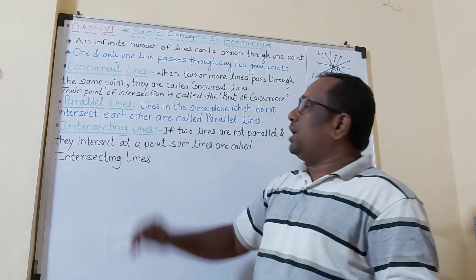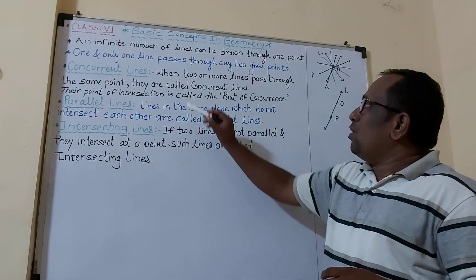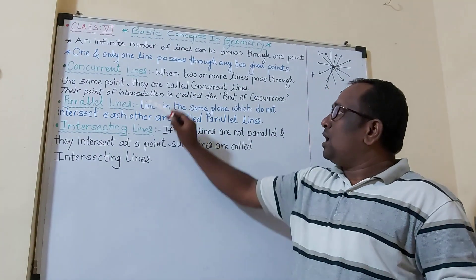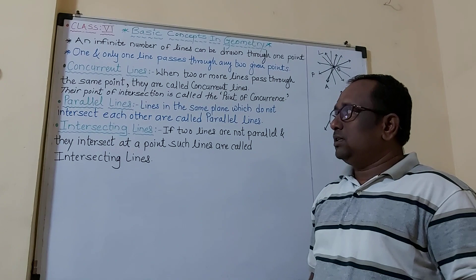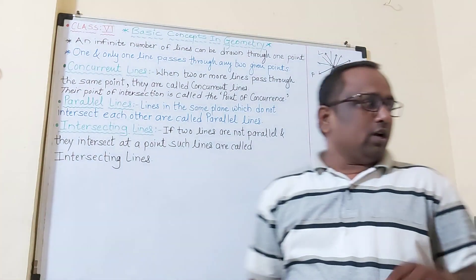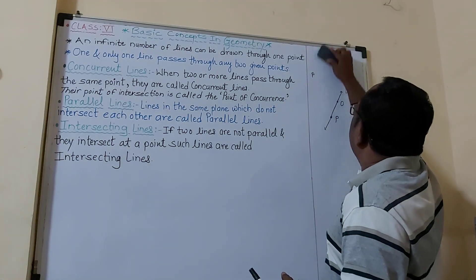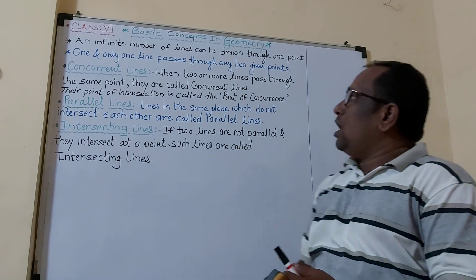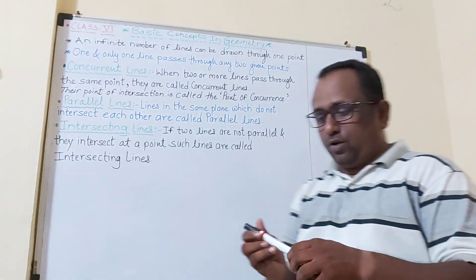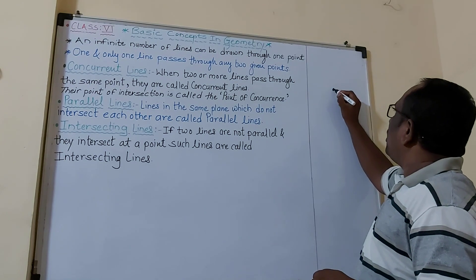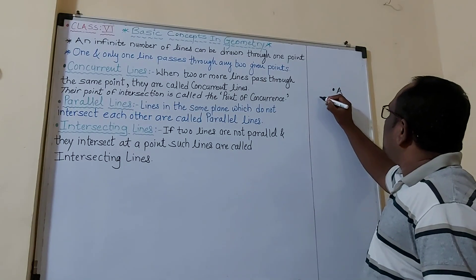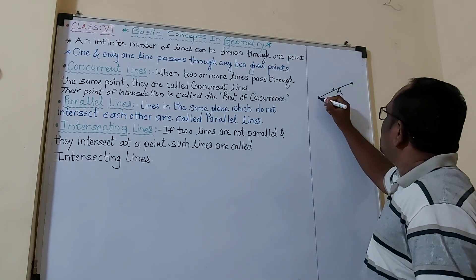Now, students, there are types of lines. The first type is concurrent lines. The definition is: when two or more lines pass through the same point, they are called concurrent lines, and their point of intersection is called the point of concurrence. For example, I draw a point A and through this point two or more lines pass.